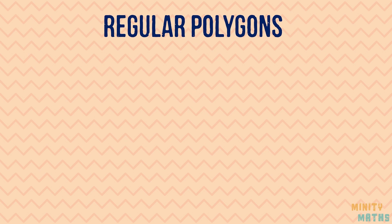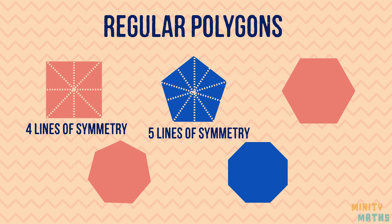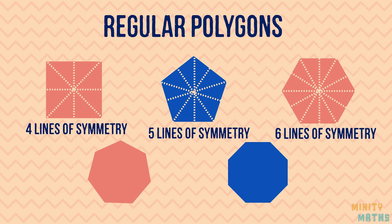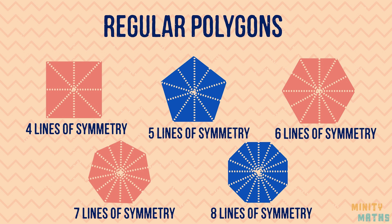Have a look at these regular polygons and their lines of symmetry. Do you notice a pattern here? A regular polygon will have the same number of lines of symmetry as the number of sides.